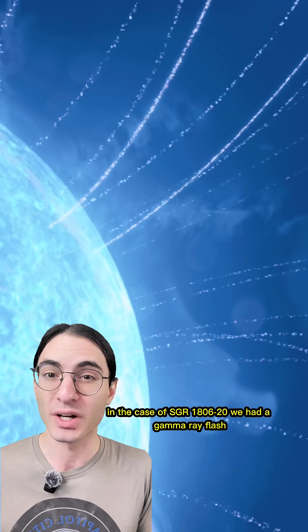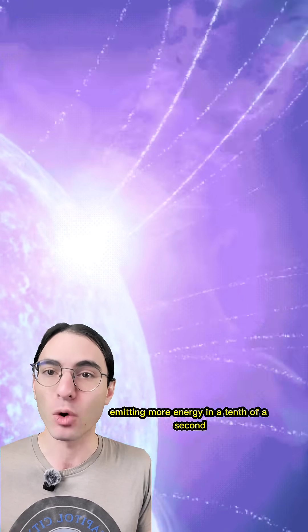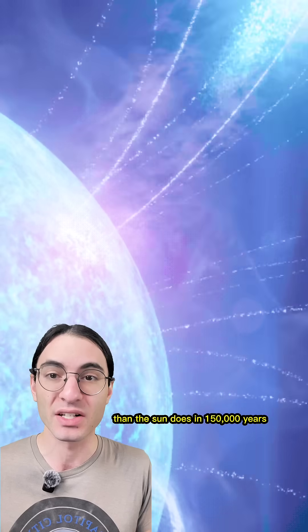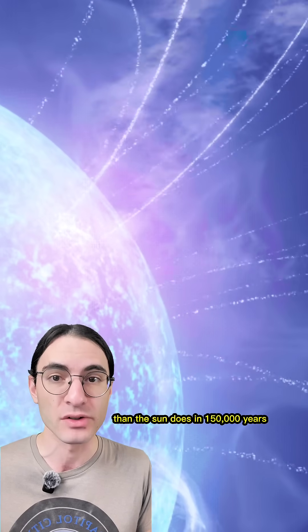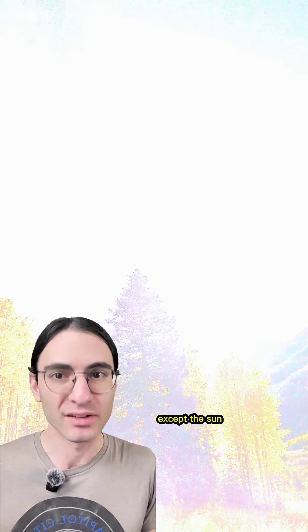In the case of SGR 1806-20, we had a gamma ray flash, emitting more energy in a tenth of a second than the sun does in 150,000 years. If we could see gamma rays, this would have been about a thousand times brighter than a full moon, brighter than anything else that's ever been observed in the sky, except the sun.